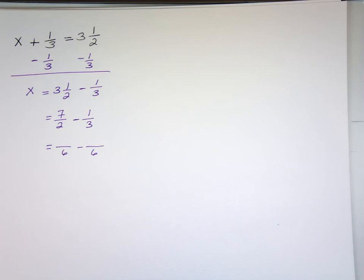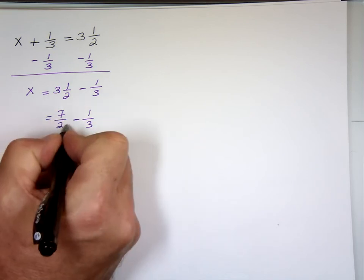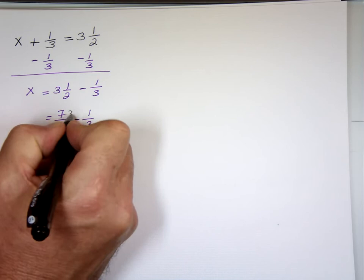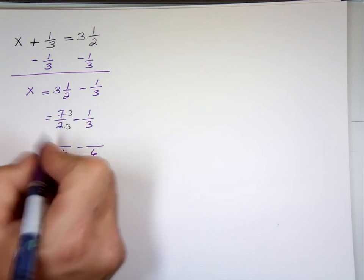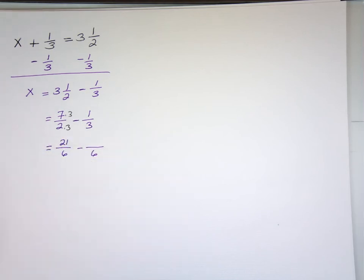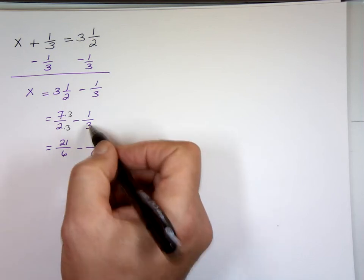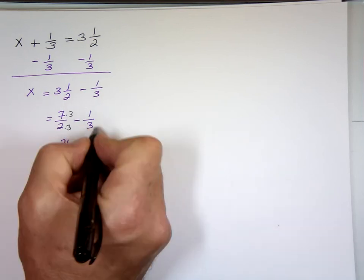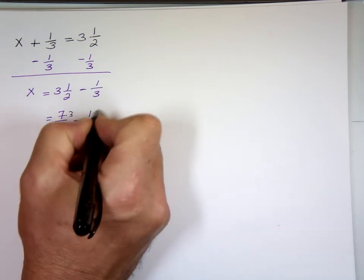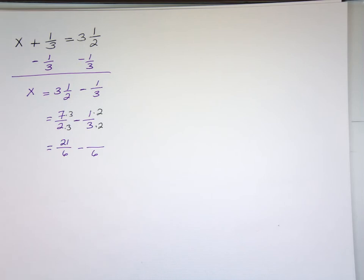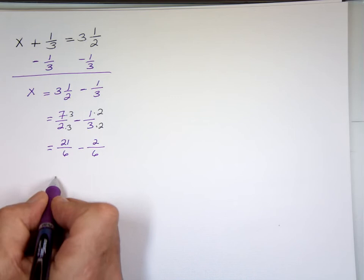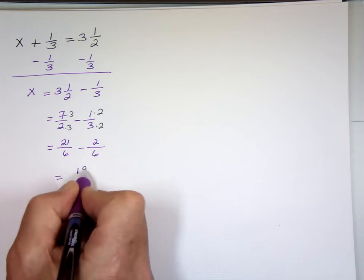I will have to multiply the two by what to make it six? Three. I'm going to multiply the top by three. Seven times three is what? Twenty-one. I need to multiply the three by what to make it six? Two. I'm going to multiply the top by two. One times two, which is two. Twenty-one minus two, which is what? Nineteen. Nineteen over six.